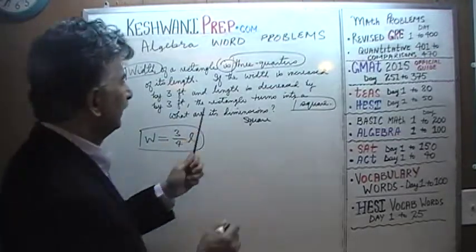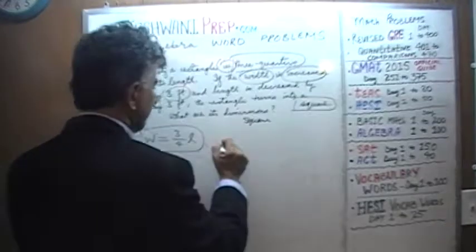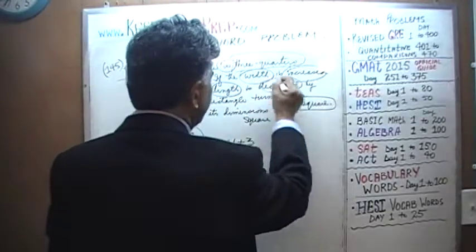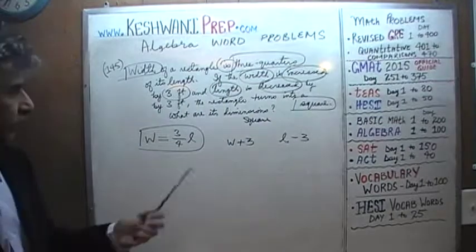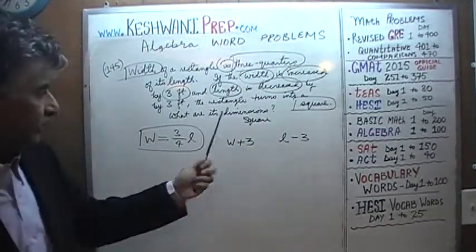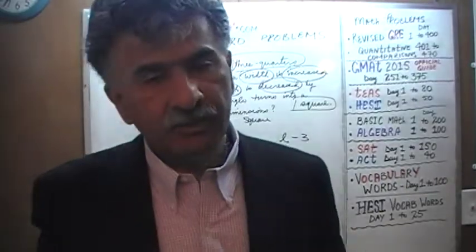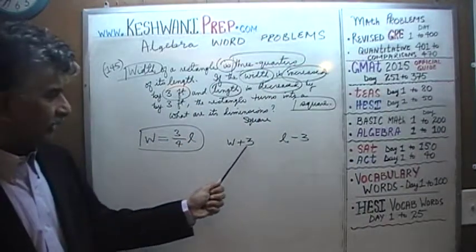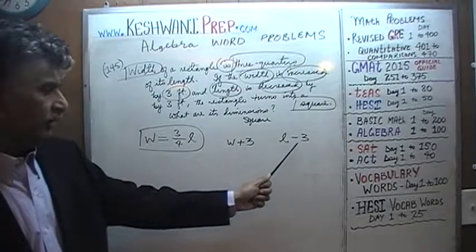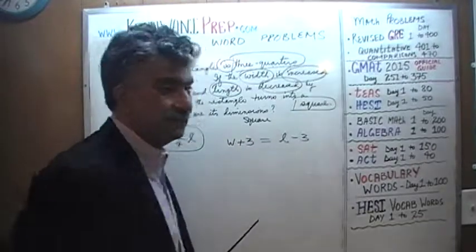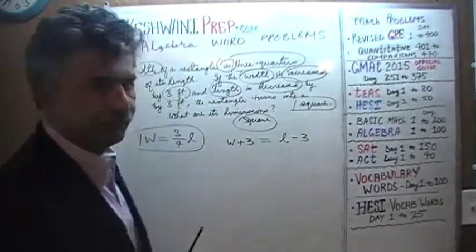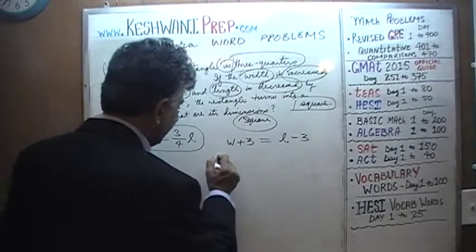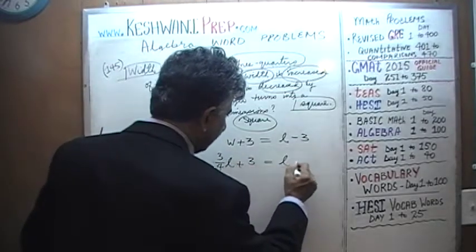They go on to tell us that if we take the width and increase it by 3 feet, and then take the length and decrease it by 3 feet, the rectangle turns into a square. In a square, all four sides are equal, so the distinction between length and width ceases to exist. The width increased by 3 equals the length decreased by 3. We know width is 3 quarters of the length, so substituting: three quarters L plus 3 equals L minus 3.